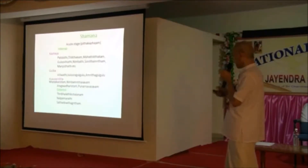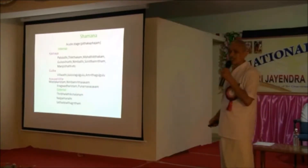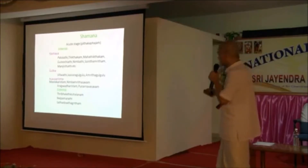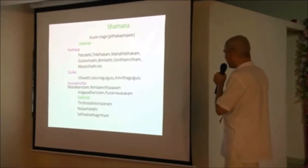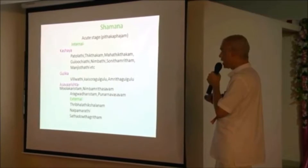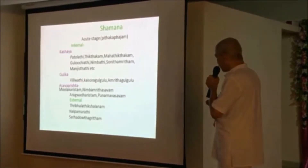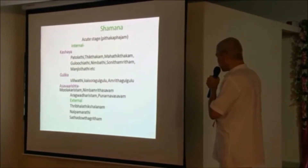For shamana purpose, in the acute state, you can give kashaya like Padawaladi, Tiktakam, Maha Tiktakam, Guluchyadi, Nimbadi, Shonita Amrita, Manjistadi, et cetera. For guliga you can give Vilwadi, Kaiswara Gulgulu, Amrita Gulgulu.